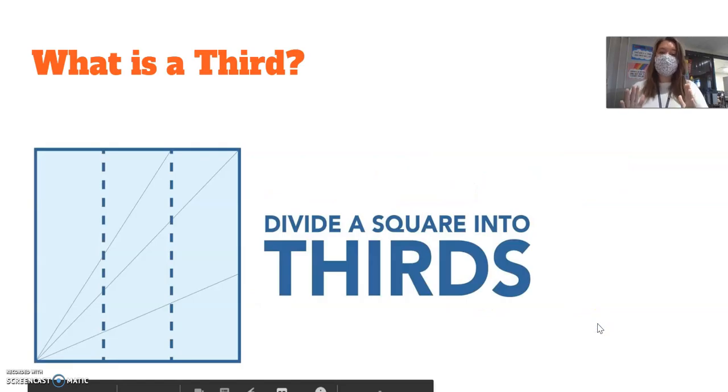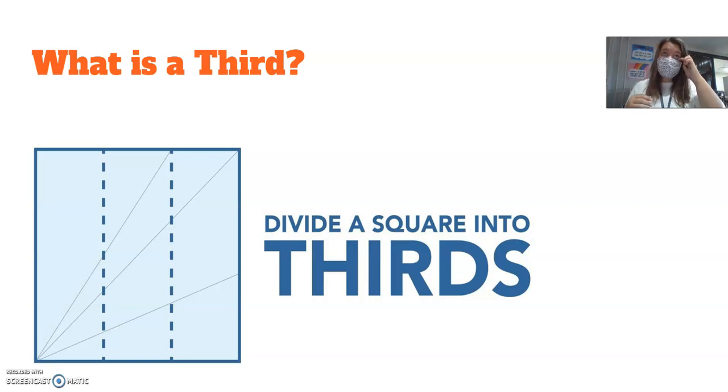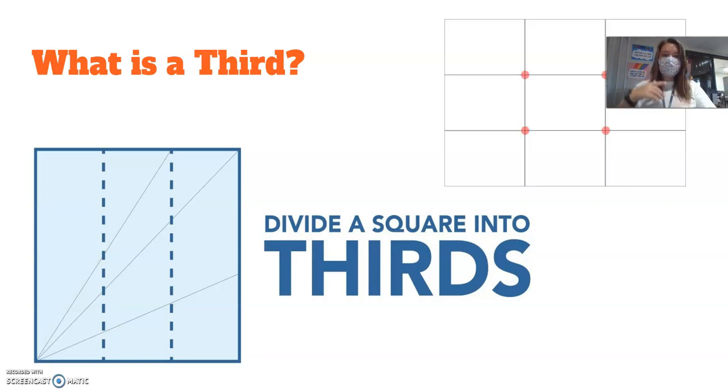What is a third? So if you take a square or it could be a rectangle when you have your image, you're going to pretend like you're drawing two lines right down the center. That draws it into thirds. The next thing you're going to do is put it into thirds going horizontally.